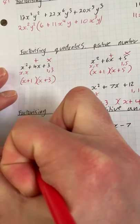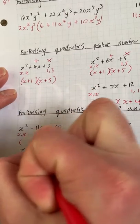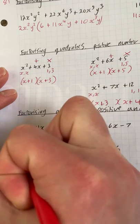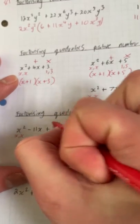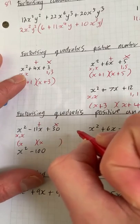So like before, the factors of x squared are x and x, and we're going to have two brackets, one with x, one with x. Now we're looking for numbers that times to make 30, that add to make minus 11.